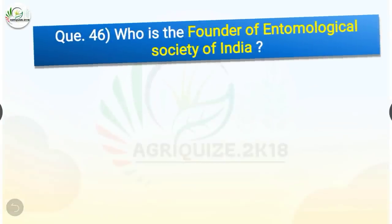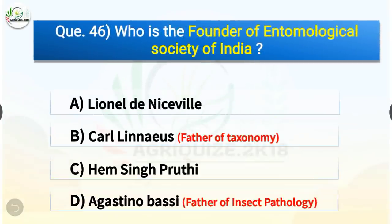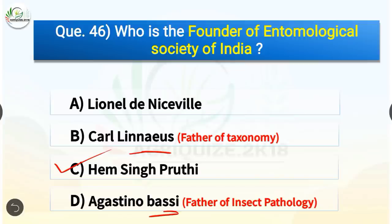Question number 46. Who is the founder of the Entomological Society of India? The options are Lionel D. Naisoville, Carl Linnaeus, Haim Singh Pruthi, or Agostino Bassi. The correct answer is option C, Haim Singh Pruthi. Haim Singh Pruthi is the founder of the Entomological Society of India, whereas Carl Linnaeus is the father of taxonomy, and Agostino Bassi is the father of insect pathology.